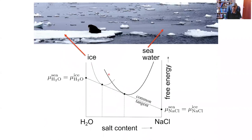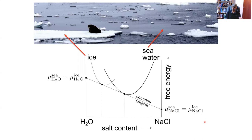When ice and seawater are put into contact and we draw a common tangent to both phases, the chemical potential of water in seawater and water in ice will be exactly the same, as will the chemical potential of sodium chloride in seawater and in ice. The reason no salt diffuses into ice is simply that the free energy of sodium chloride molecules in seawater is exactly the same as in ice, even though the concentrations are different. Concentrations at equilibrium can be different, yet there is no tendency for diffusion.